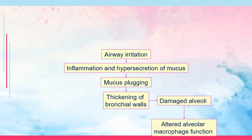In the pathophysiology of chronic bronchitis, there is airway irritation, causing inflammation and hypersecretion of mucus. There will be mucus plugging on the bronchial walls — the bronchus is primarily affected. Later on, the alveoli become involved, resulting in altered alveolar macrophage function. When macrophage function is damaged, there is decreased immune resistance to infection.